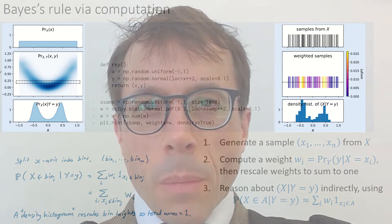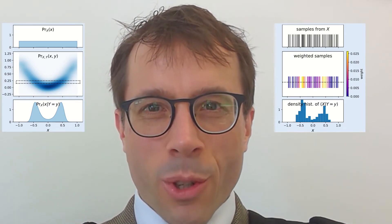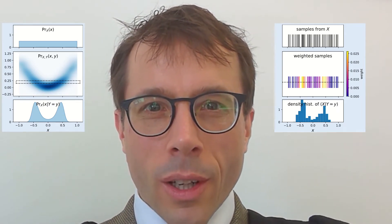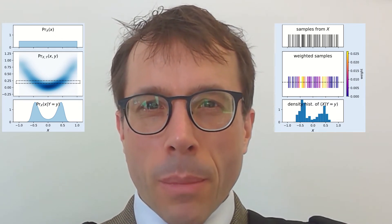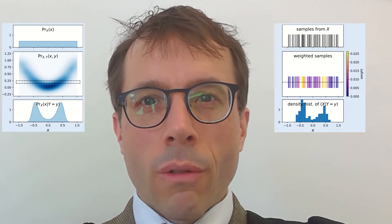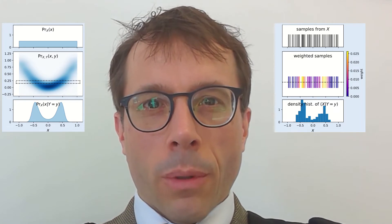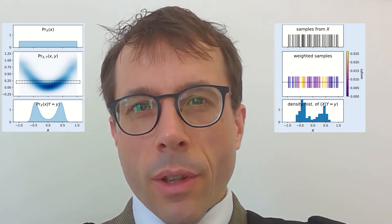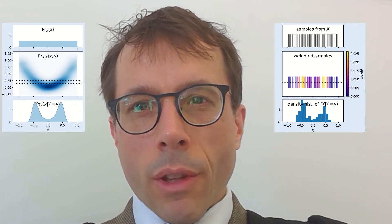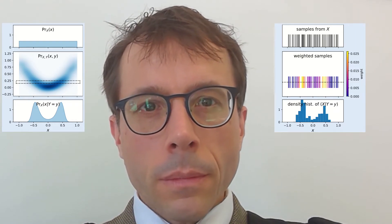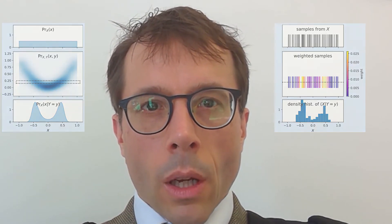Now, you might be able to work out from these pictures why the computational procedure works. This picture might perhaps be a bit misleading though, because I've chosen a uniform distribution for x in this example, but the procedure works whatever the distribution. And at the end of this video, we're going to see a proof. Just two more things to take note of though.